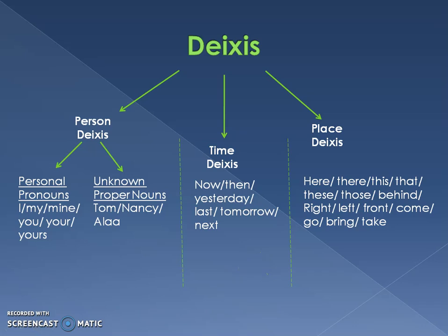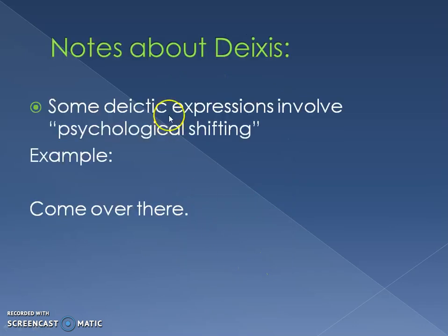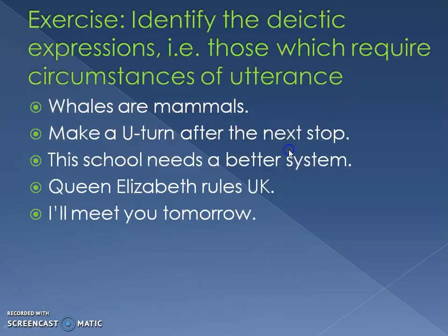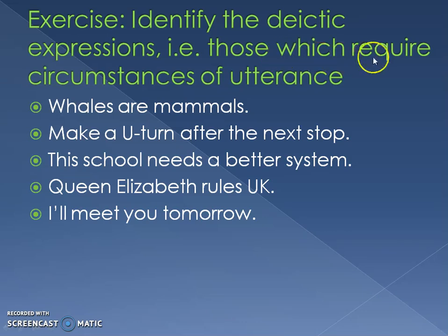Now that we've looked at some examples of deixis, some deictic expressions involve psychological shifting. For example, when someone says 'come over there,' you might expect 'come over here,' but 'come over there' can be used in situations where the speaker is going somewhere and is telling the listener to go to that same place.